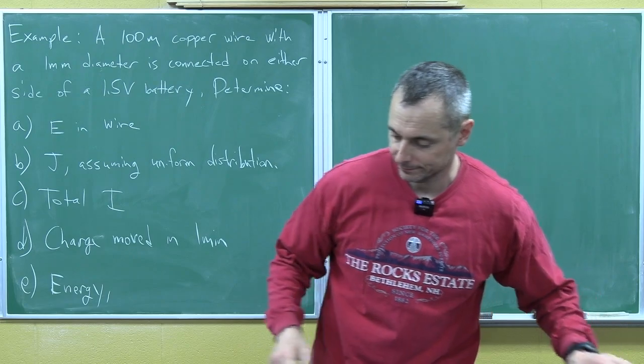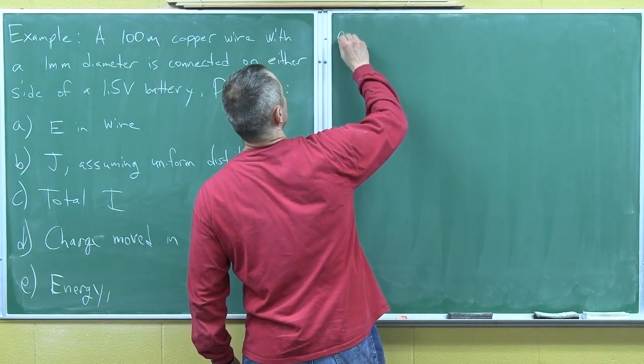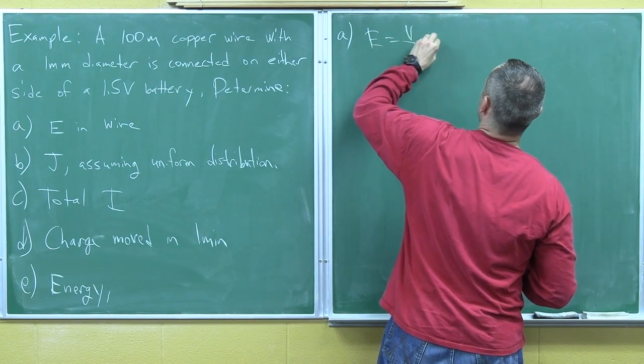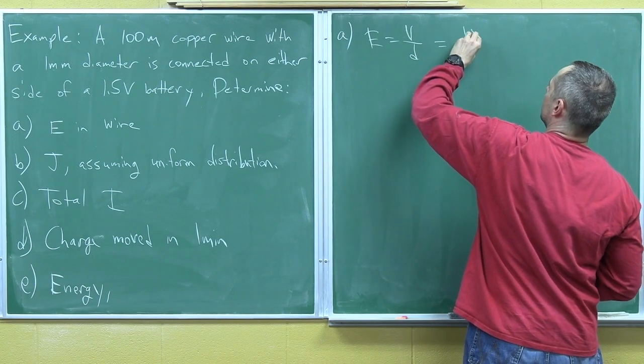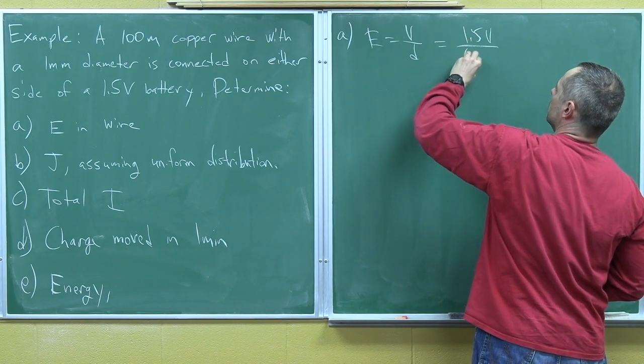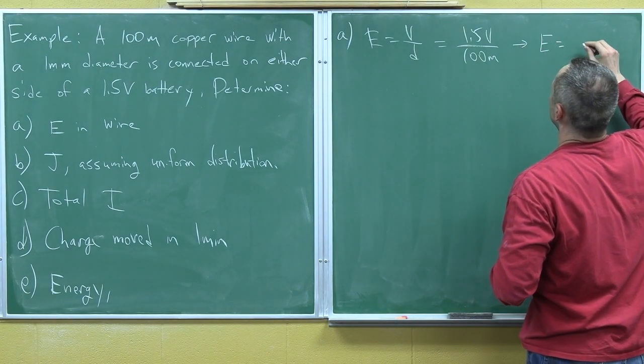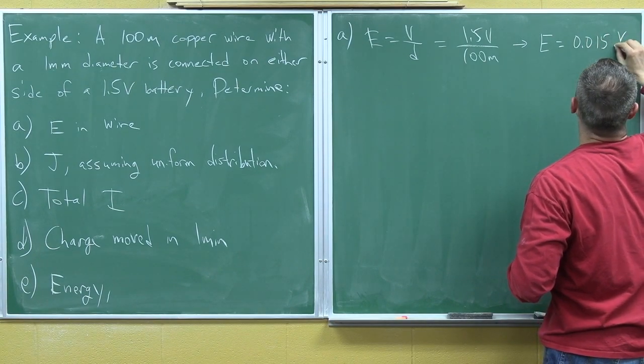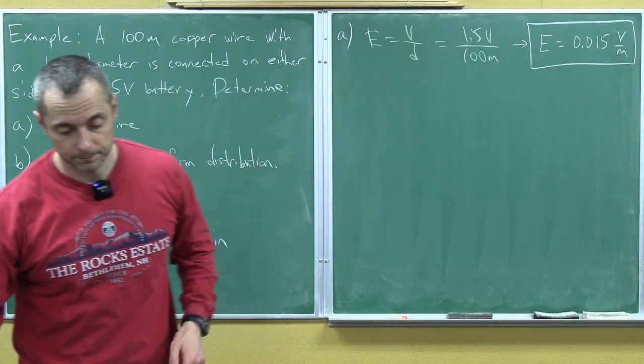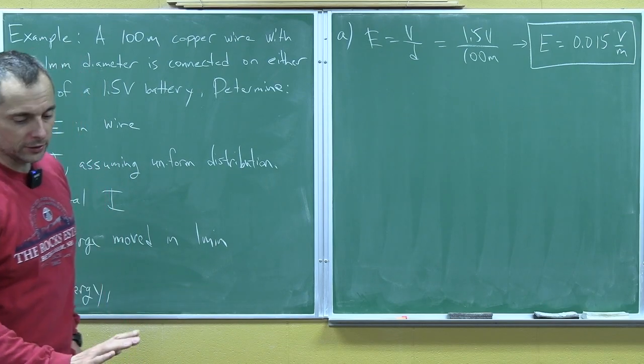Okay, so the first thing, what we want is the electric field and the wire. Well, remember, V equals ED or E equals voltage over the distance. And so we have a 1.5-volt battery, and it's connected to a 100-meter-long wire. And so we get an electric field of 0.015 volts per meter, or you could put newtons per coulomb. Either one's an accepted unit of electric field.